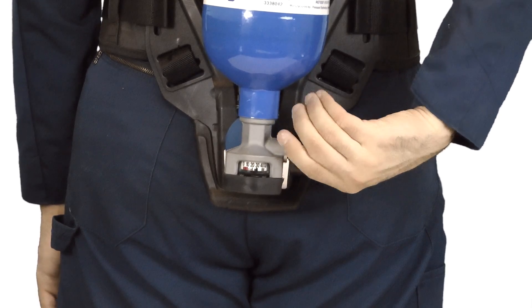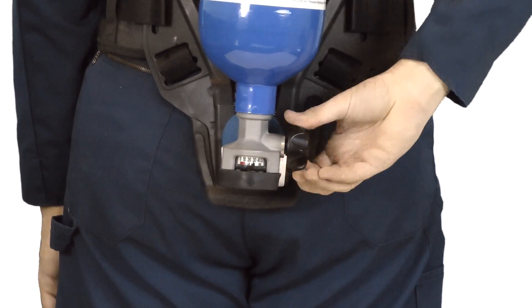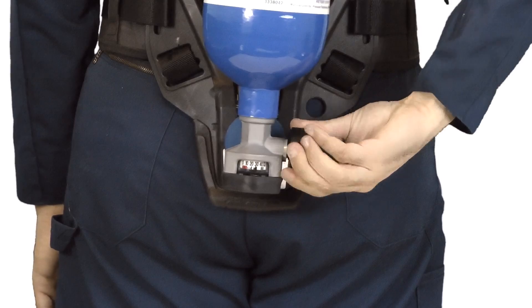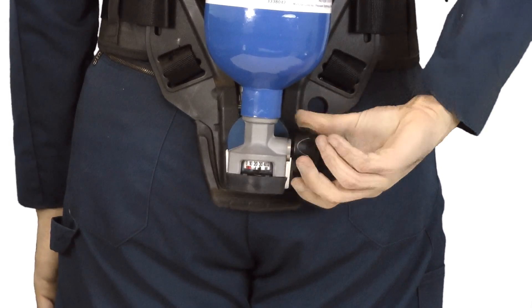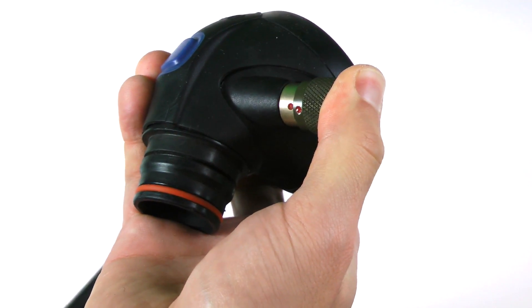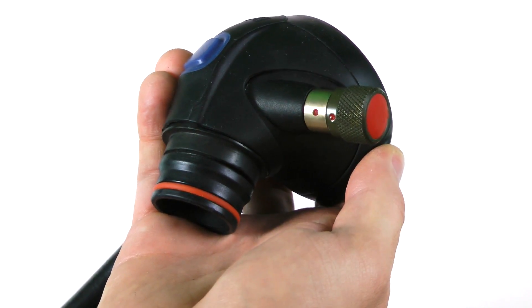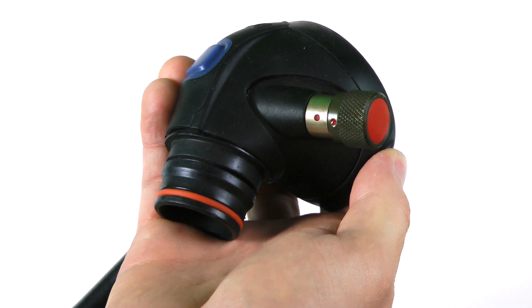Use your right hand to close the cylinder valve by turning the valve towards you until it is completely closed. Press in on the LDV's bypass to release the remaining air from the SCBA.